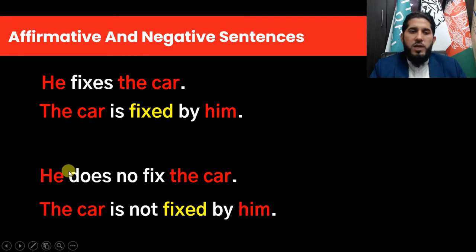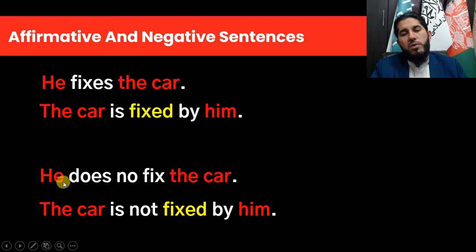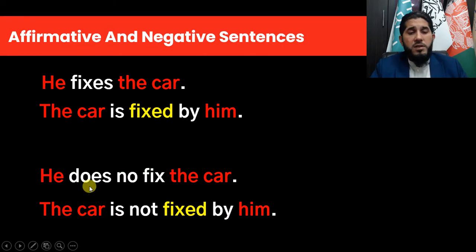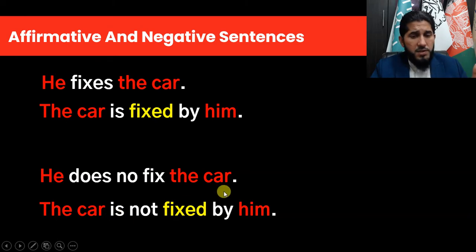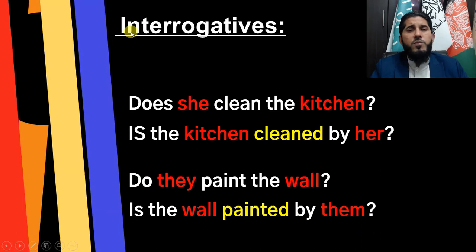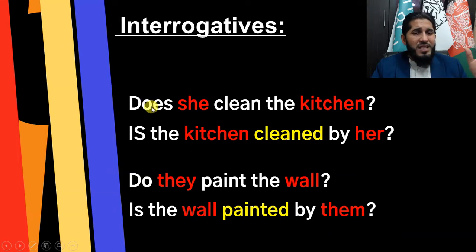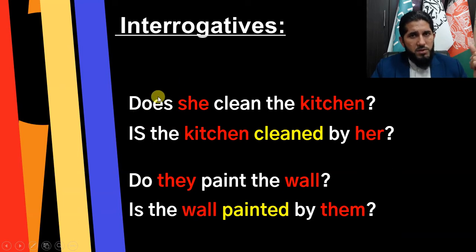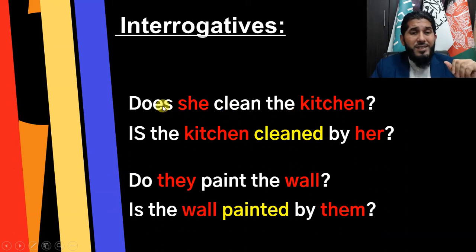If you want to change the sentence to negative form: 'He does not fix the car' uses auxiliary 'does' in active form, but in passive form it becomes 'The car is not fixed by him' — instead of 'does' you use auxiliary 'is.' So 'He doesn't fix the car' becomes 'The car isn't fixed by him.' For interrogative sentences in simple present tense we use auxiliaries 'do' and 'does' — 'does' with third person singular subjects and 'do' with the rest. For example: 'Does she clean the kitchen?'